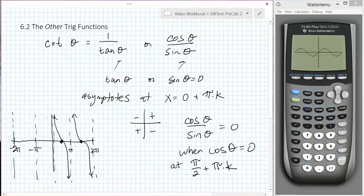When we put this information together, we come up with a graph that looks like a tangent that's flipped over the horizontal axis and shifted. Let's look at a better sketch here.